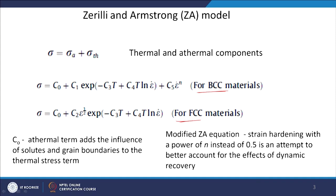The equation captures the effect of strain hardening through a strain hardening exponent, the effect of strain rate, and the effect of temperature, which together allow prediction of the flow stress for a BCC material. For FCC materials, a slightly different equation is proposed with a change in how the strain component is introduced. C0 is the athermal term which adds the influence of solute and grain boundary to the thermal stress term.